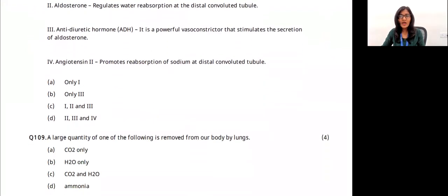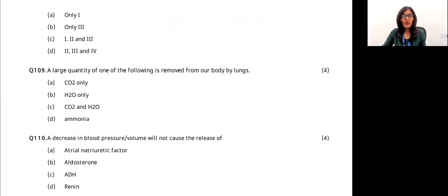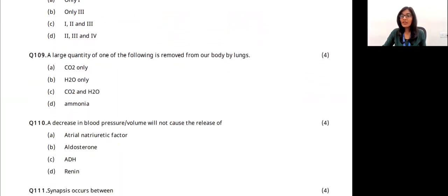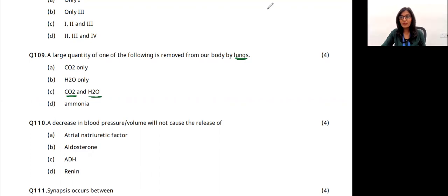Question 14: a large quantity of which substance is removed from the body by the lungs? The lungs remove carbon dioxide and water. The answer is option C.